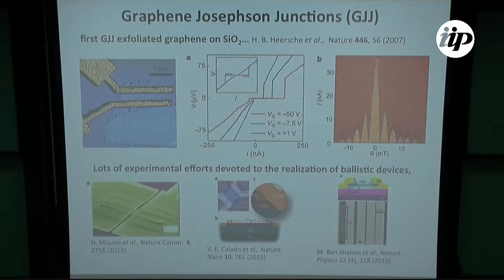This implies that usually what people do is to exfoliate graphene and to transfer it on a substrate that is silicon oxide, usually. To get ballistic behavior, what has to be done is to isolate the graphene so that most of the time it is suspended on top of the substrate.